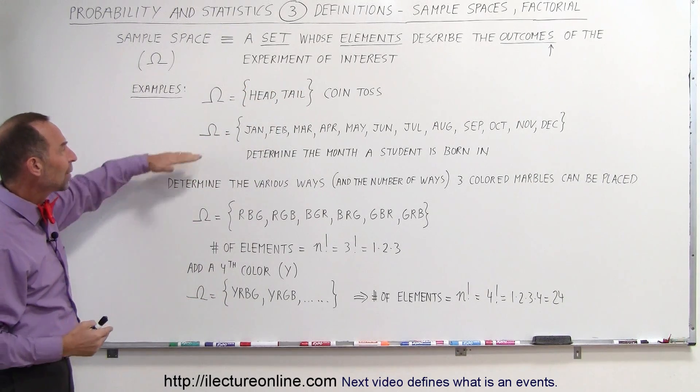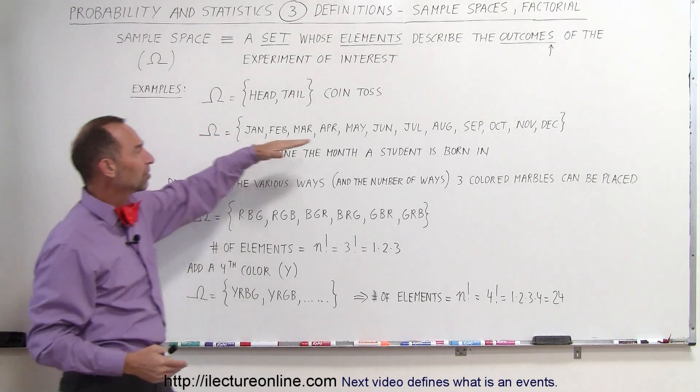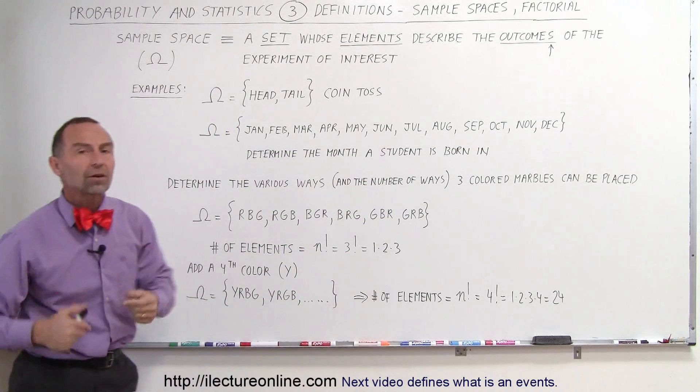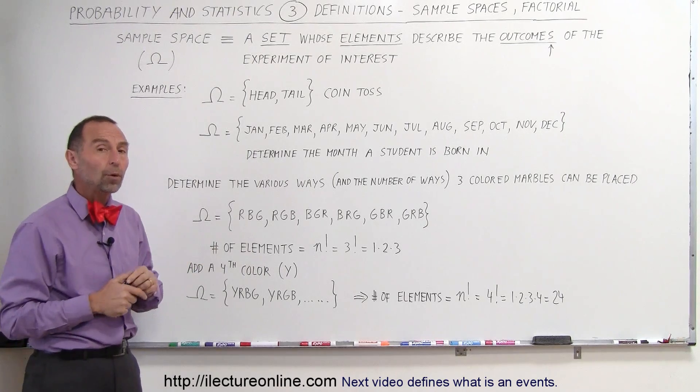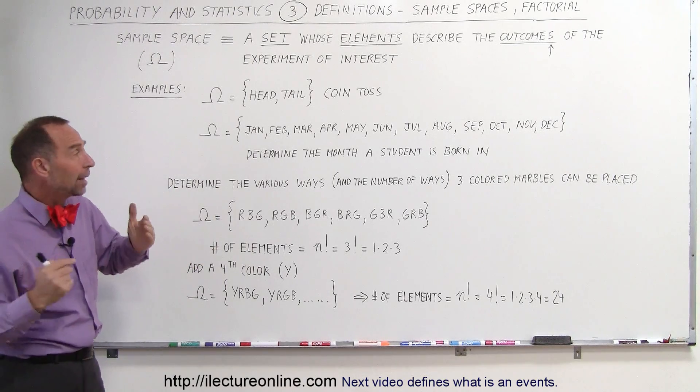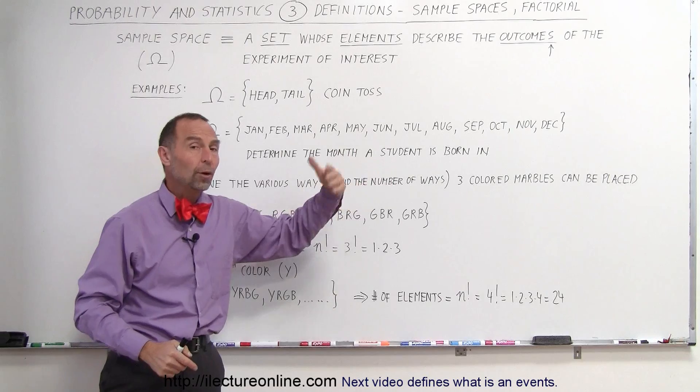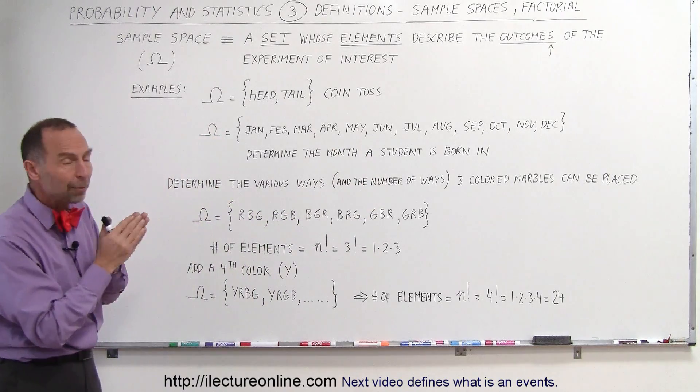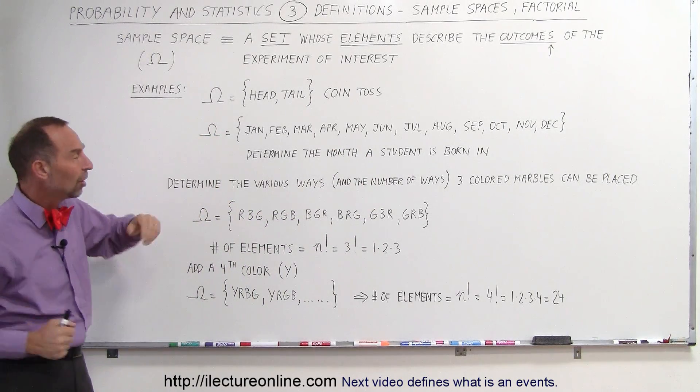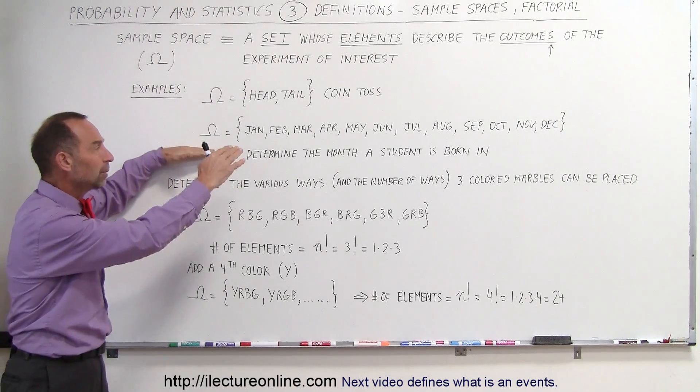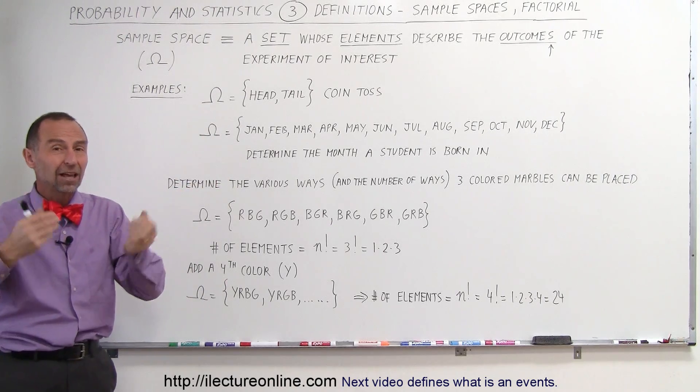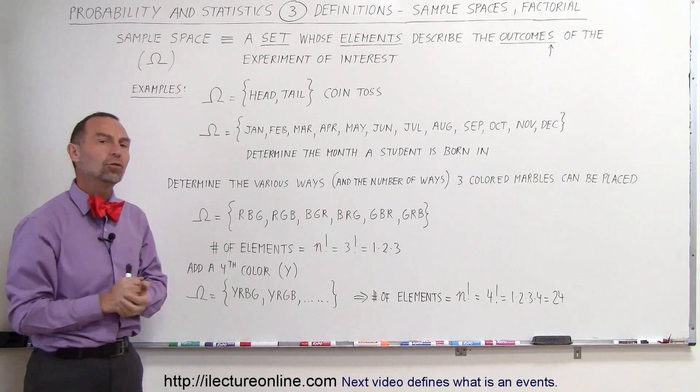For example, let's say that we have a sample space that includes all the months of the year and we have a student in our class, and we're trying to determine what month that student was born in. Now the only possible outcomes would be these 12 months—there's no other than the 12 months there—so that encompasses all the possible outcomes. Therefore this is the sample space, the set of all the possible outcomes of the experiment, determining what month a student is born in.